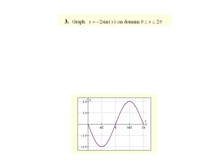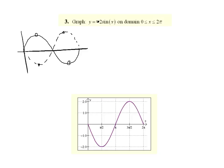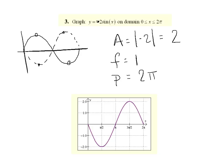Here's our last 30-second challenge: y equals negative 2 sine of x. The big key is that you can visualize the traditional sine curve, and then all the negative does is reflect it over the x-axis — what used to be a max is now a min, and vice versa. The amplitude is the absolute value of negative 2, which is 2. The frequency is 1 and therefore the period is 2 pi divided by 1, which is 2 pi. So we see one complete cycle, going as high as 2 and as low as negative 2, reflected over the x-axis.